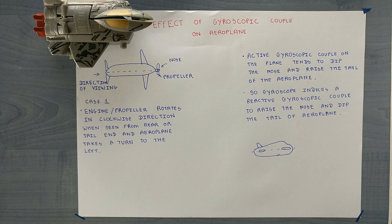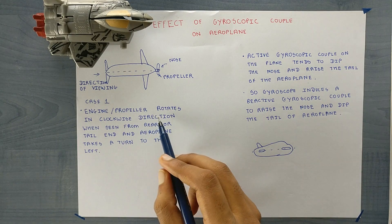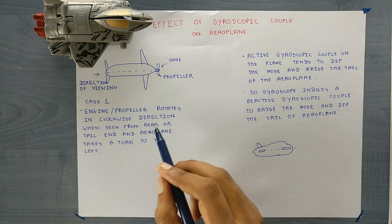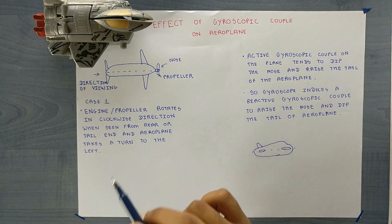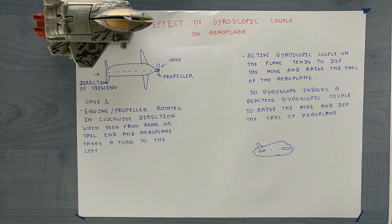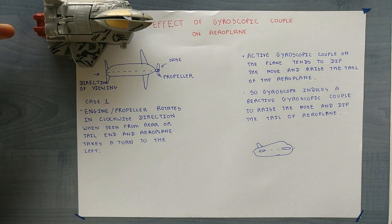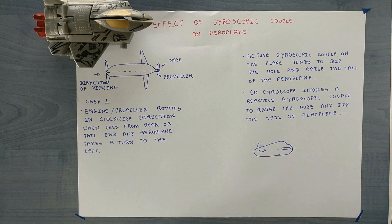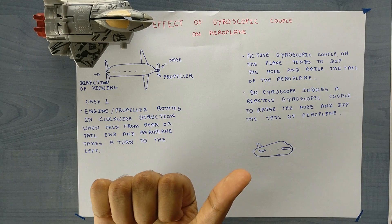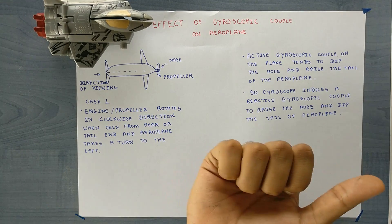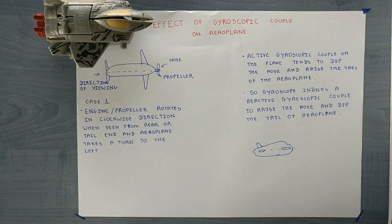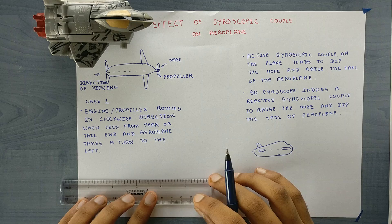The first case is the engine or propeller rotates in clockwise direction when seen from the rear or tail end. So when we are seeing from this side the propeller rotates in clockwise direction. According to the right hand thumb rule, as it is rotating in clockwise direction, the velocity vector will be in this direction — that is towards the right. So I will draw a vector to the right.